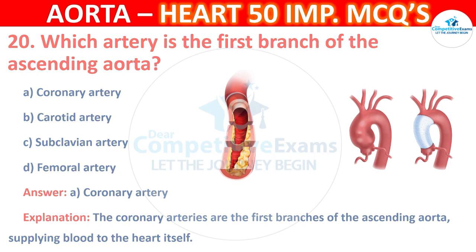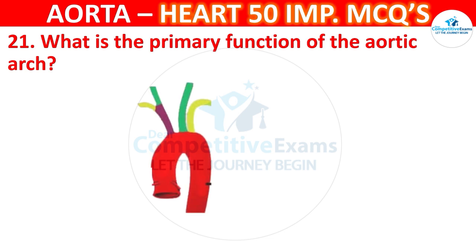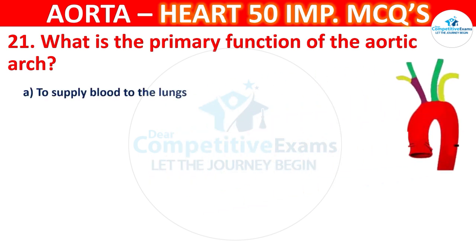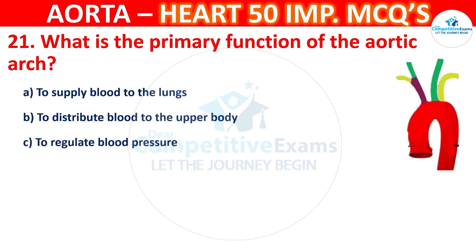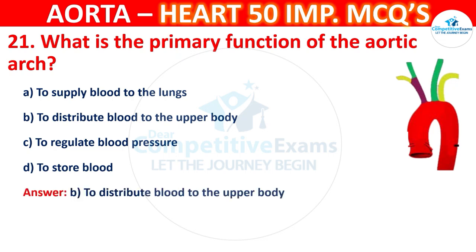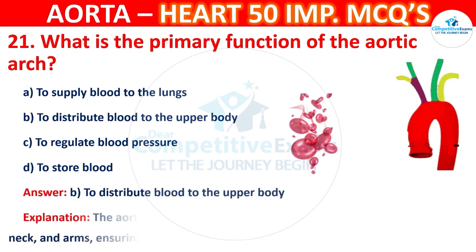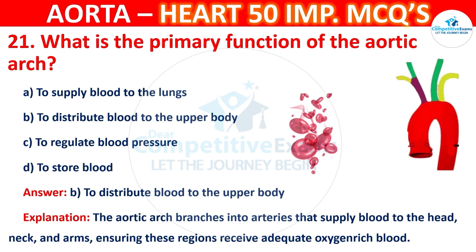Question number 21: What is the primary function of the aortic arch? Options are to supply blood to the lungs, to distribute blood to the upper body, to regulate blood pressure, or to store blood. The correct answer is B — to distribute blood to the upper body. The aortic arch branches into arteries that supply blood to the head, neck, and arms, ensuring these regions receive adequate oxygen-rich blood.